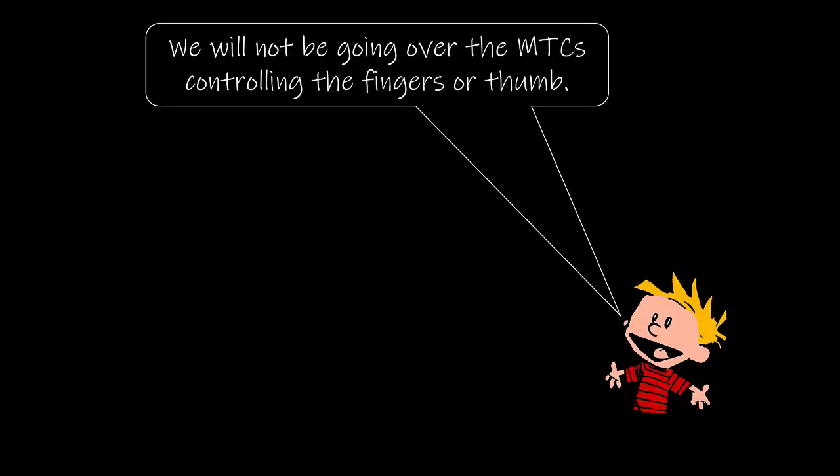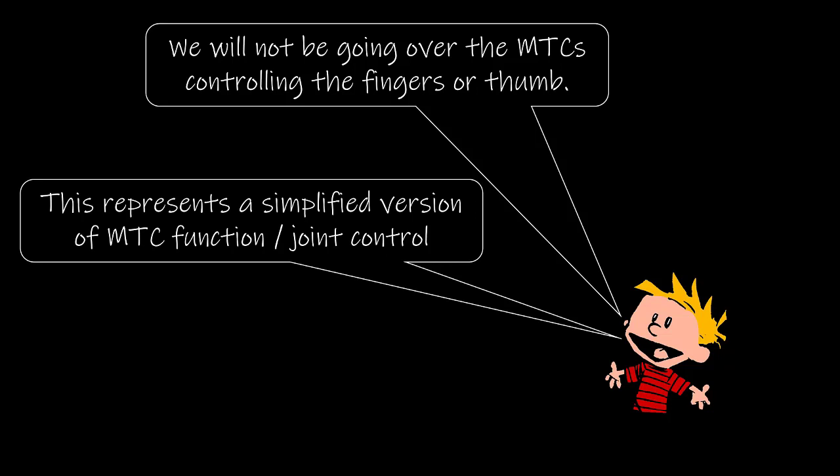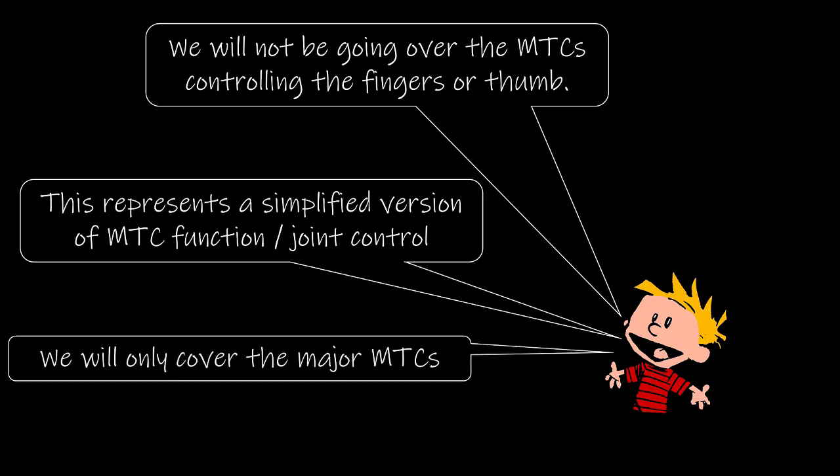A couple of words of caution before we begin. First, for this module, we will not be examining the MTCs that control the fingers or the thumb. Second, it's important to understand this module represents a simplified version of MTC function and joint control. We are going under the assumption that each joint would be moving in isolation. Multi-joint movement is a lot more complex than this, but we've got to start somewhere. Third, we will not necessarily examine every MTC that creates torque about a joint. We will only be examining the major ones in this module.